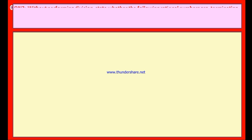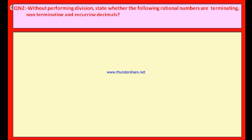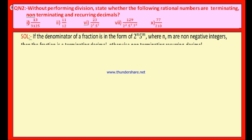Next is question number 2. Without performing division, state whether the following rational numbers are terminating or non-terminating recurring decimals. Before solving, we should know that if the denominator of a fraction is in the form of 2 power n into 5 power m, where n and m are non-negative integers, then the fraction is a terminating decimal. Otherwise, it is a non-terminating recurring decimal.